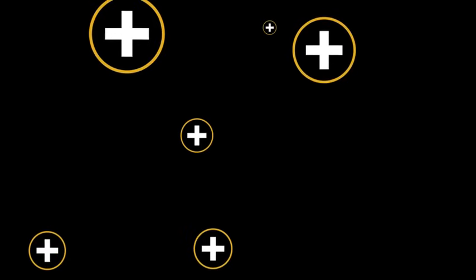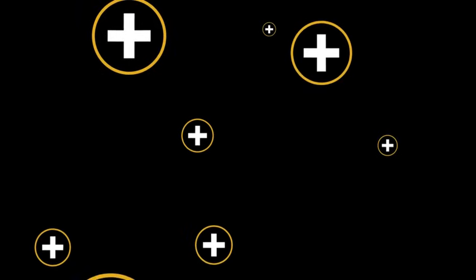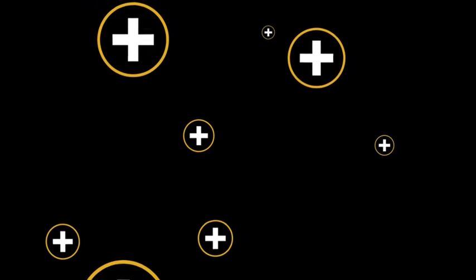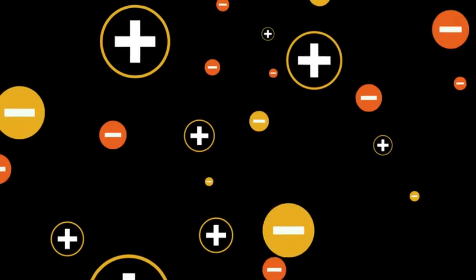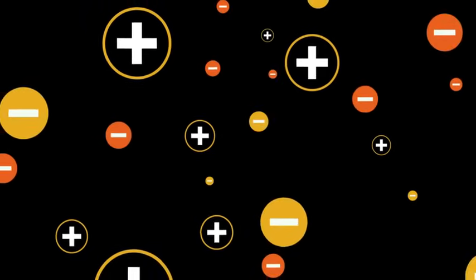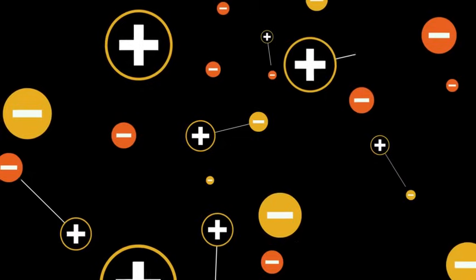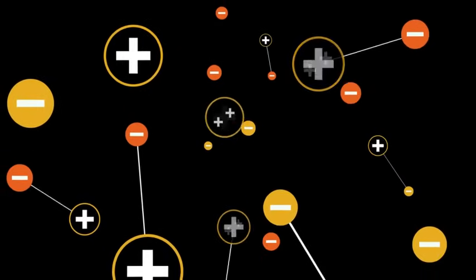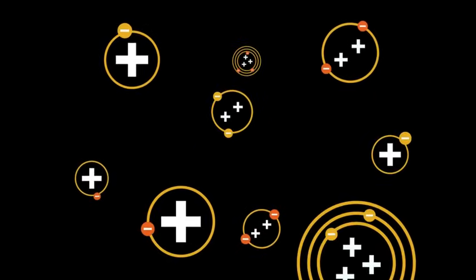About 380,000 years later, things began to change. By then, temperatures had fallen low enough for protons, which have positive charges, to link up with electrons, which have negative charges, and together they formed electrically neutral atoms.